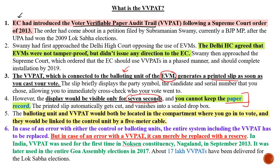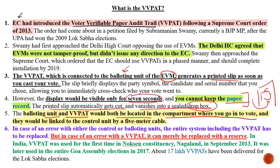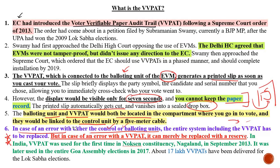The balloting unit and VVPAT are both located in the compartment where you go to vote. They are connected to the control unit by a 5-metre cable. Important for prelims: if there is a fault in the control unit or balloting unit, the whole EVM machine including VVPAT must be replaced. But if there is an error only in the VVPAT, only the VVPAT needs to be replaced — the EVM machine does not need replacement.